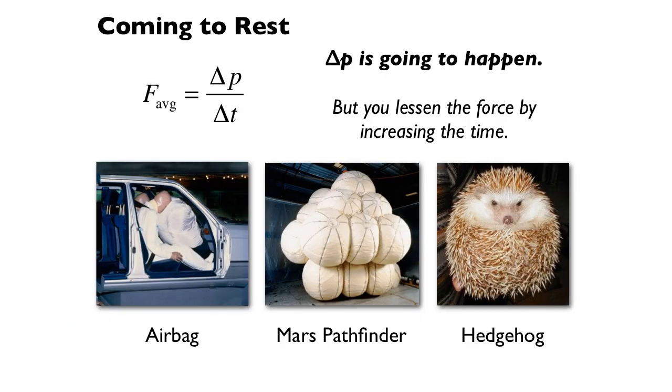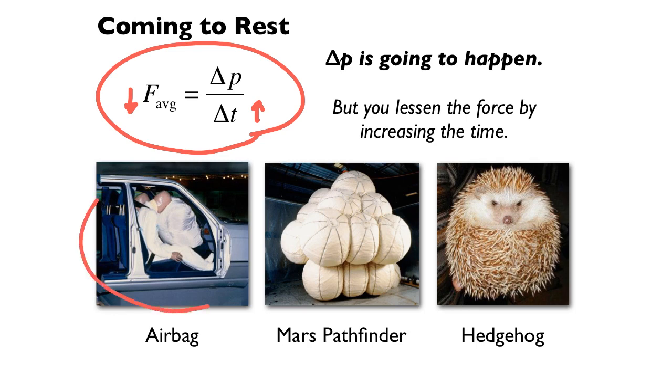Since the average force is delta P over delta T, if the time is large, the force is smaller. What you want to do is make the collision take place over a longer interval of time to minimize the forces in the collision. So in a car, you have an airbag that brings you to rest slowly. The car has crumple zones, again, that lets it come to rest slowly. A pole that a car might hit is designed to break off so the car can come to rest more slowly.